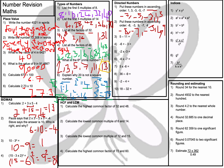Question number 3: 5 take away 11. I start at 5 and take away 11, giving negative 6. The answer is −6. Question 4: negative 6 plus negative 3. The plus and minus becomes a minus, so I have negative 6 take away 3, which is negative 9.